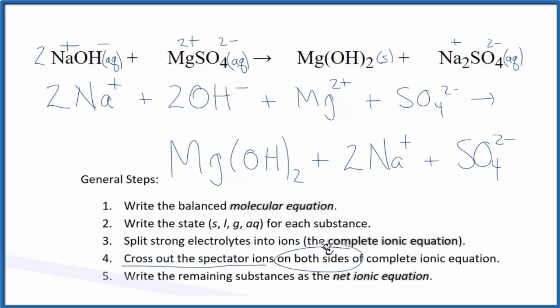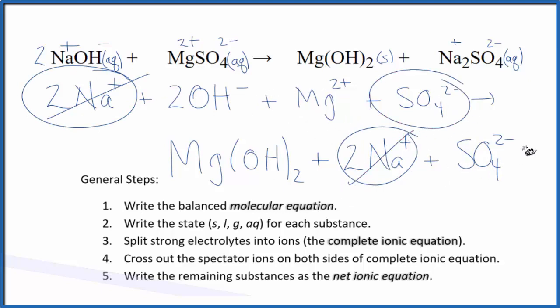They're on both sides of the complete ionic equation. They haven't changed, so we're not interested in them. I can see in the reactants, I have 2 sodium ions. And then here in the products, I have 2 sodium ions. We can get rid of those. We also have sulfate ion in the reactants and in the products. We can get rid of that as well.